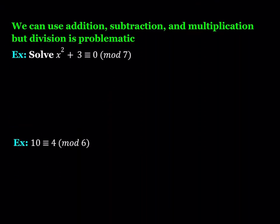I'll show you examples where negative values are extremely helpful. We can use addition. Since modular arithmetic is a system of arithmetic with a finite number of integers, you're allowed to do pretty much the same things you do normally — you can add, subtract, or multiply by the same number — but division is kind of problematic. We're going to look at division in the next example.